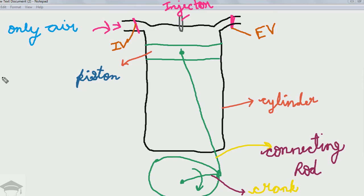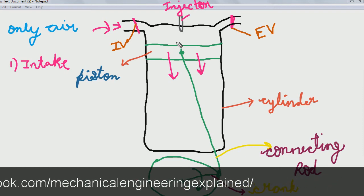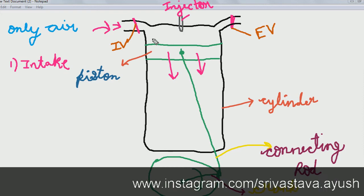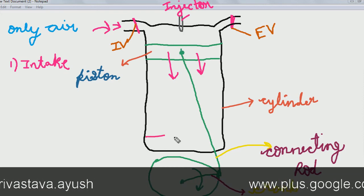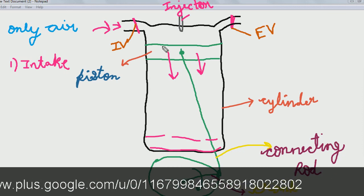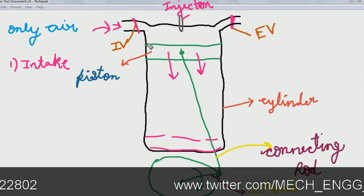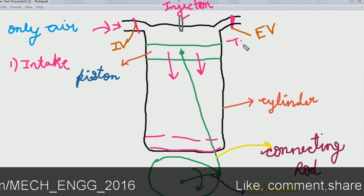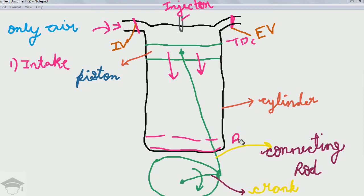In the first stroke — the intake stroke — only air is taken in. The piston moves downwards, and suction occurs because of the vacuum created. The intake valve opens and only air enters. When the piston reaches the bottom dead center, this space is occupied by air. So from top dead center to bottom dead center, only air is sucked in — that is the intake stroke, the first stroke.